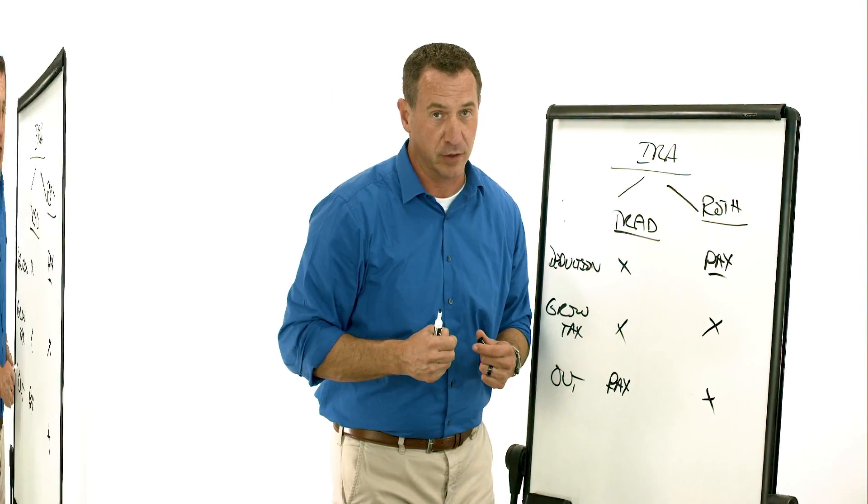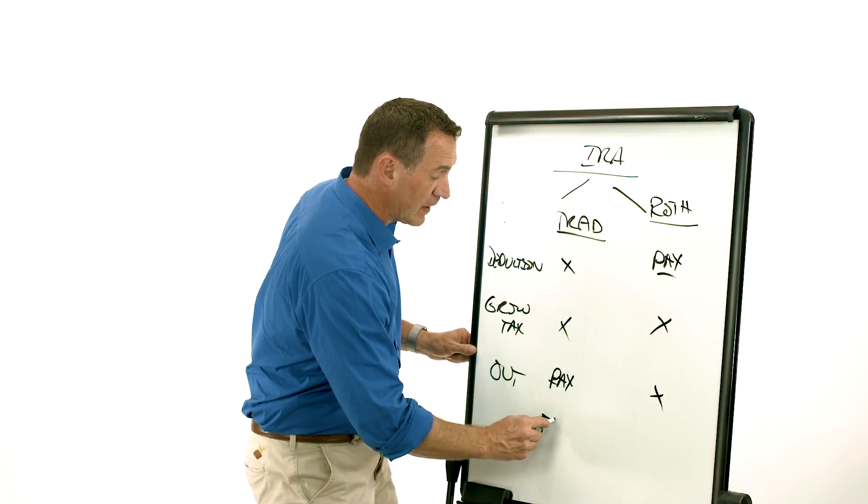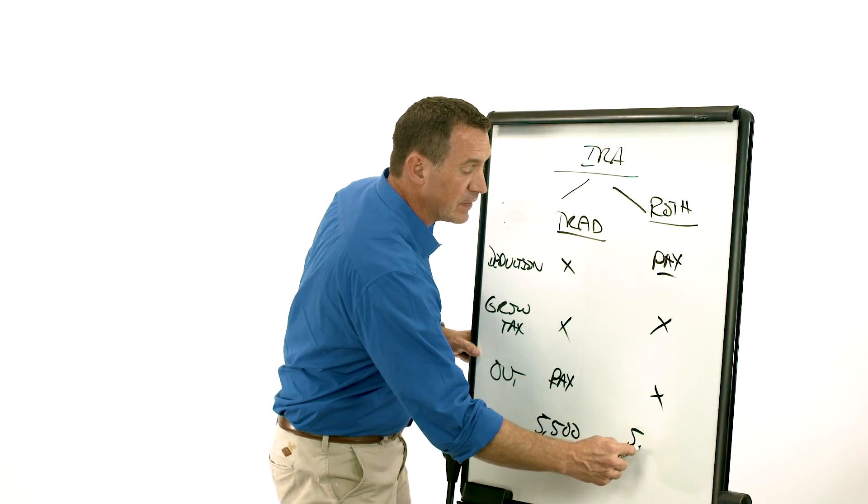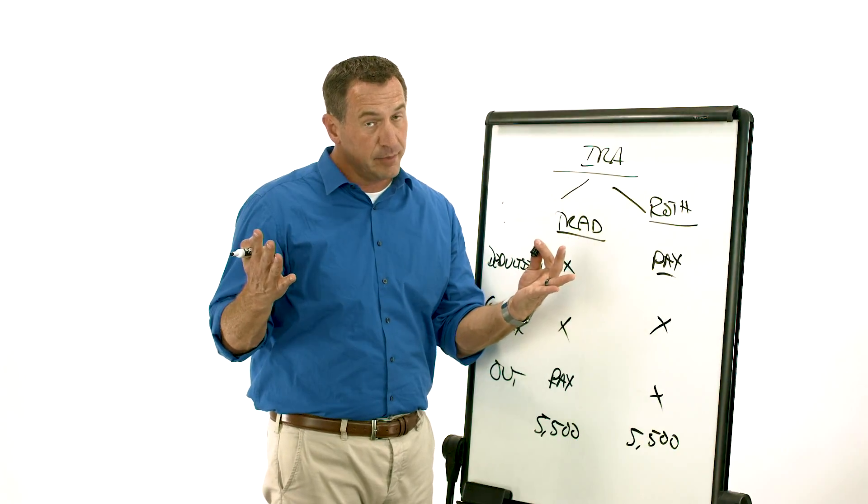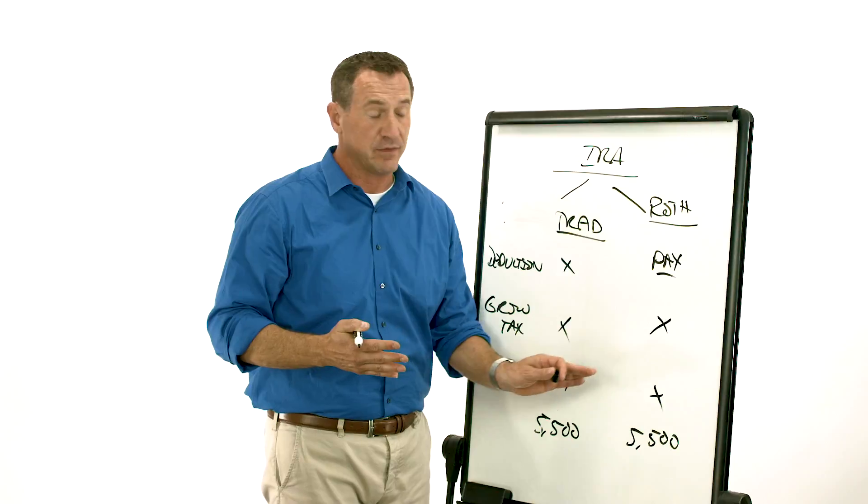Well, let's talk a little bit more. So if we talk contributions, believe it or not, they are the same. I can put $5,500 in a regular traditional IRA and $5,500 in a Roth IRA. And if I'm 50 years or older, I can put an extra thousand in, so that's $6,500, $6,500.